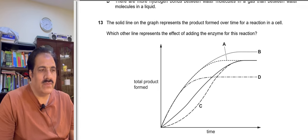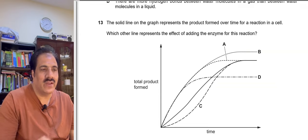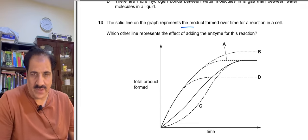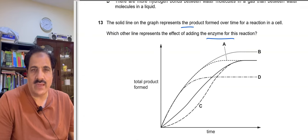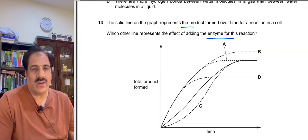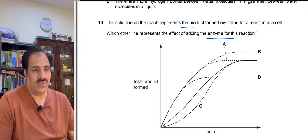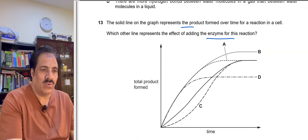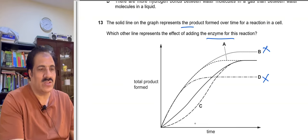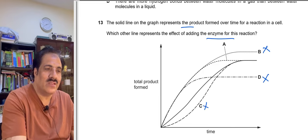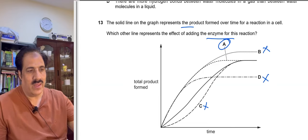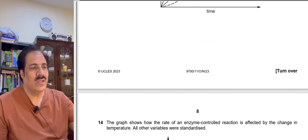Question 13: A solid line on the graph represents product formed over time for a reaction in a cell. Adding an enzyme speeds up the rate of reaction by decreasing activation energy, but the final yield of product remains the same — only the reaction goes faster. Option B produces more product, option D produces less, and option C reaches the same yield but more slowly. Option A is correct: same final yield but reached faster.